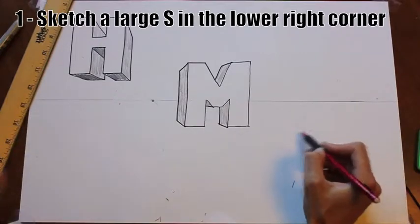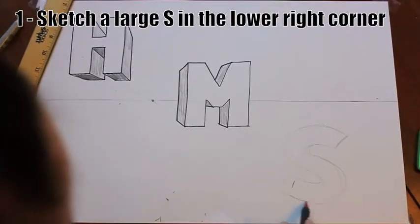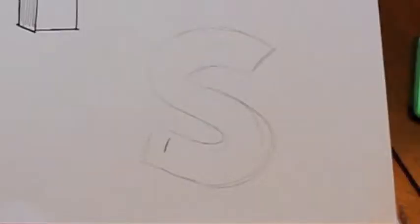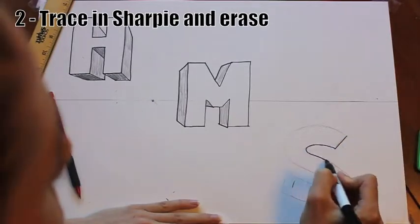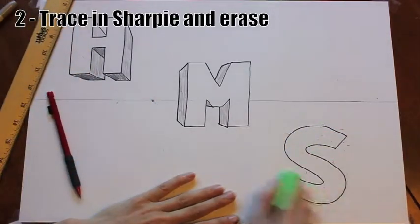The first step, like usual, is to draw your letter. We have a large S in the lower right corner of the paper. Make sure you've drawn your S well, like we practice on our worksheet. Then trace over it in Sharpie and erase your extra pencil marks.